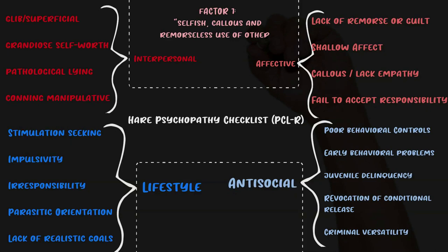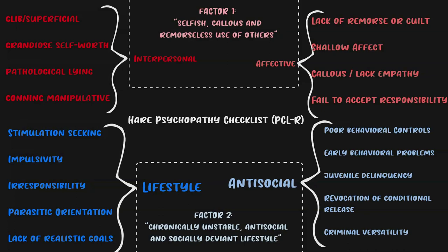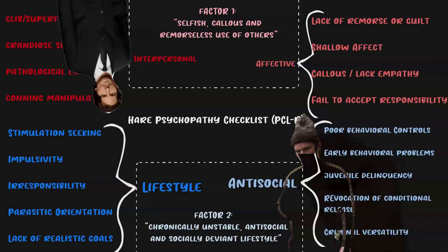Two additional items are promiscuous sexual behavior and many short-term marital relationships. A factor analysis of the PCL-R revealed two major factors: Factor one — selfish, callous, and remorseless use of others — correlates with narcissistic personality disorder, low anxiety, low empathy, low stress reactivity, low suicide risk, and high achievement. Factor two — chronically unstable antisocial and socially deviant lifestyle — correlates with antisocial personality disorder, social deviance, sensation seeking, low socioeconomic status, and higher suicide risk. Factor one captures the 'snakes in suits' type; factor two captures the parasitic, impulsive type.